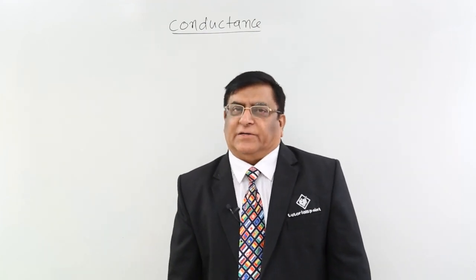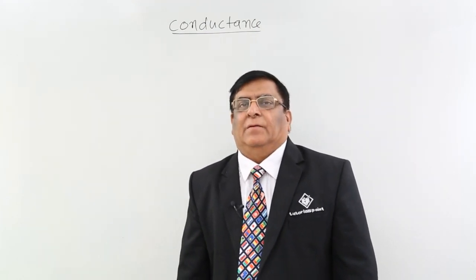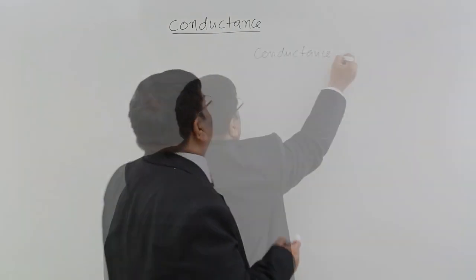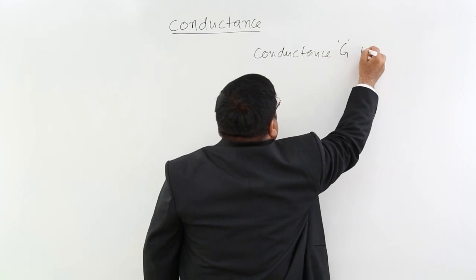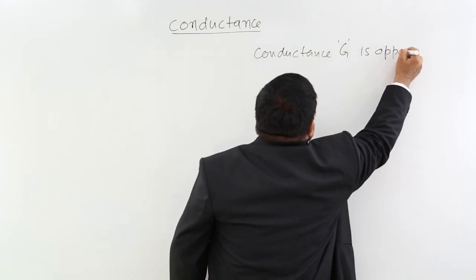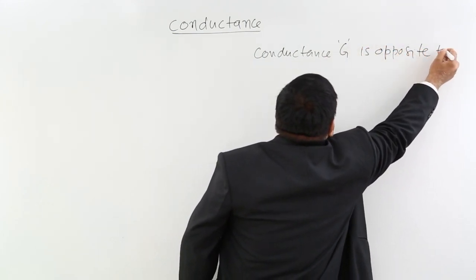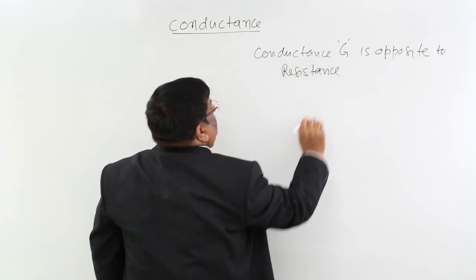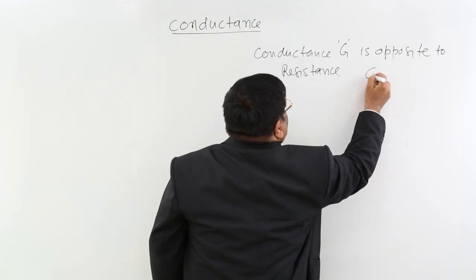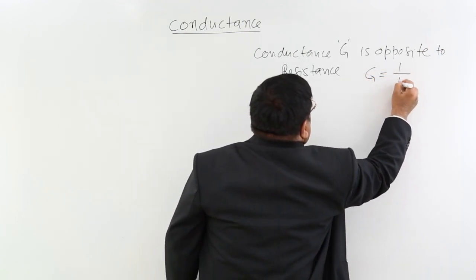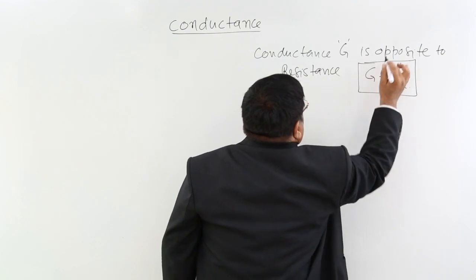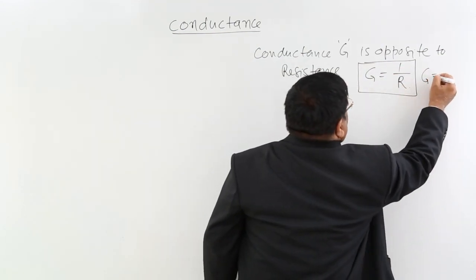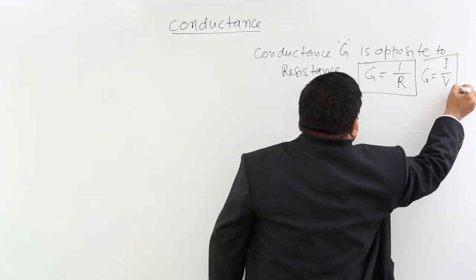Conductance is a property of a conductor, but it is opposite to resistance. Conductance G is opposite to resistance; that is, G is equal to 1 upon R, or you can say G is equal to I upon V in a conductor.